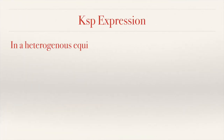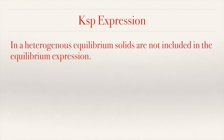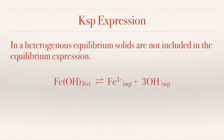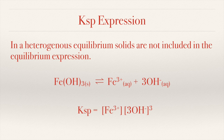Let's look at another example. For the precipitation of iron hydroxide giving Fe³⁺ and 3 OH⁻ ions, the equilibrium constant expression — which we call the solubility product or Ksp — will be [Fe³⁺] raised to 1 times [OH⁻] raised to 3.